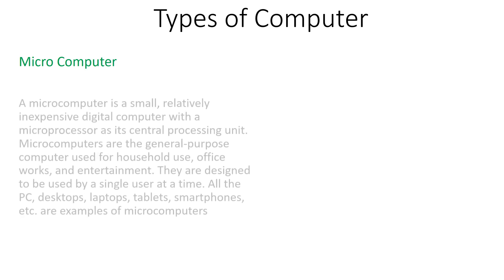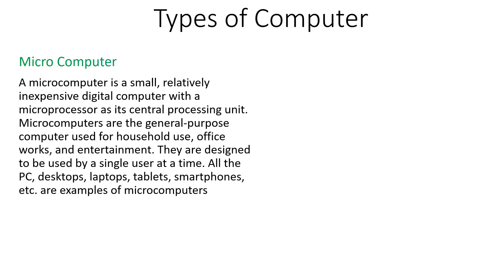Now I will show you the different types of computer on the basis of size and power. Under this category, the smallest computer is the micro computer. Microcomputer is a small, relatively inexpensive digital computer that has the microprocessor as the main processing unit. Microcomputers are general purpose computers used for multiple tasks, for example household activities like making documents, official use, and entertainment such as watching movies or listening to music.